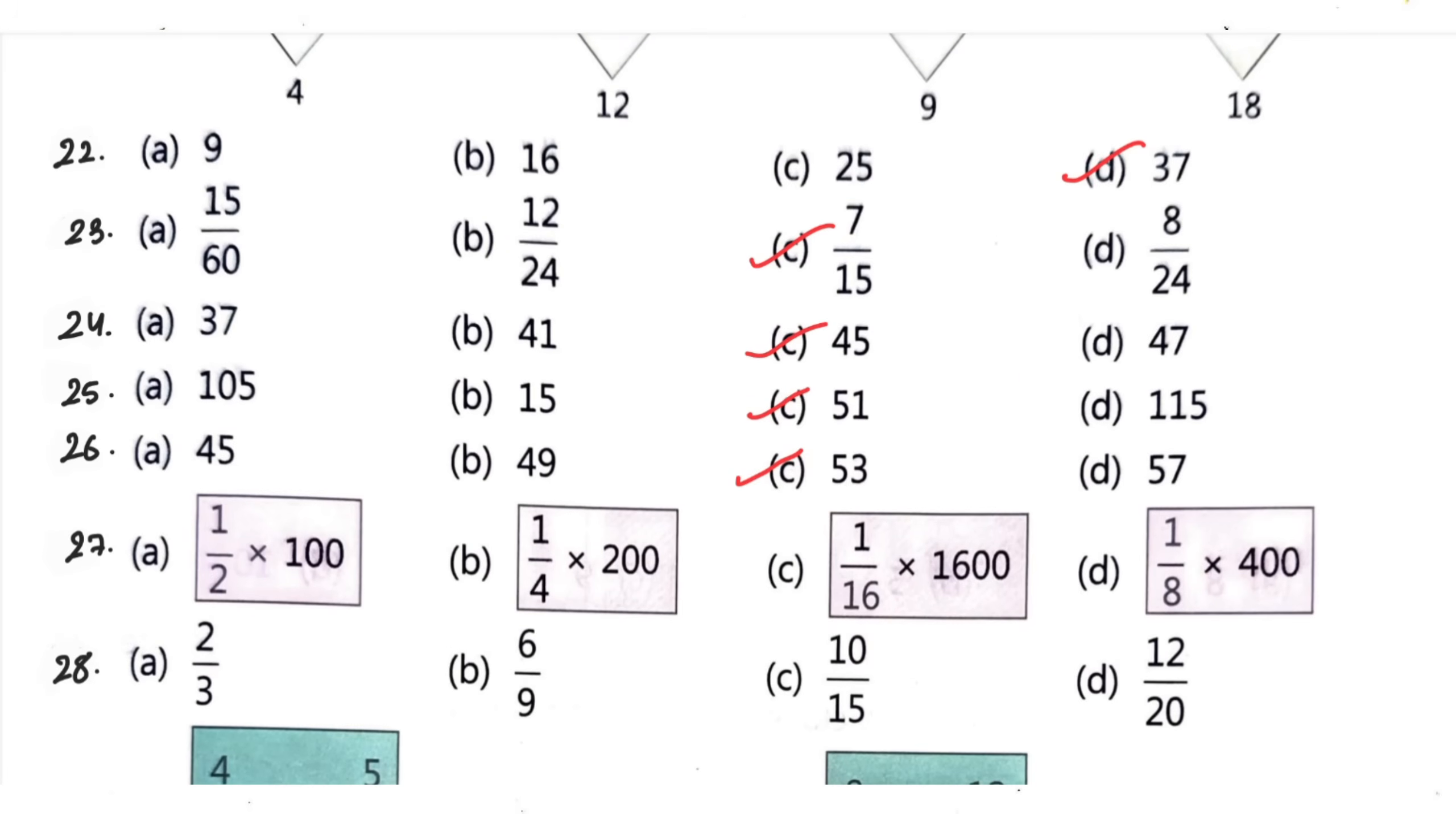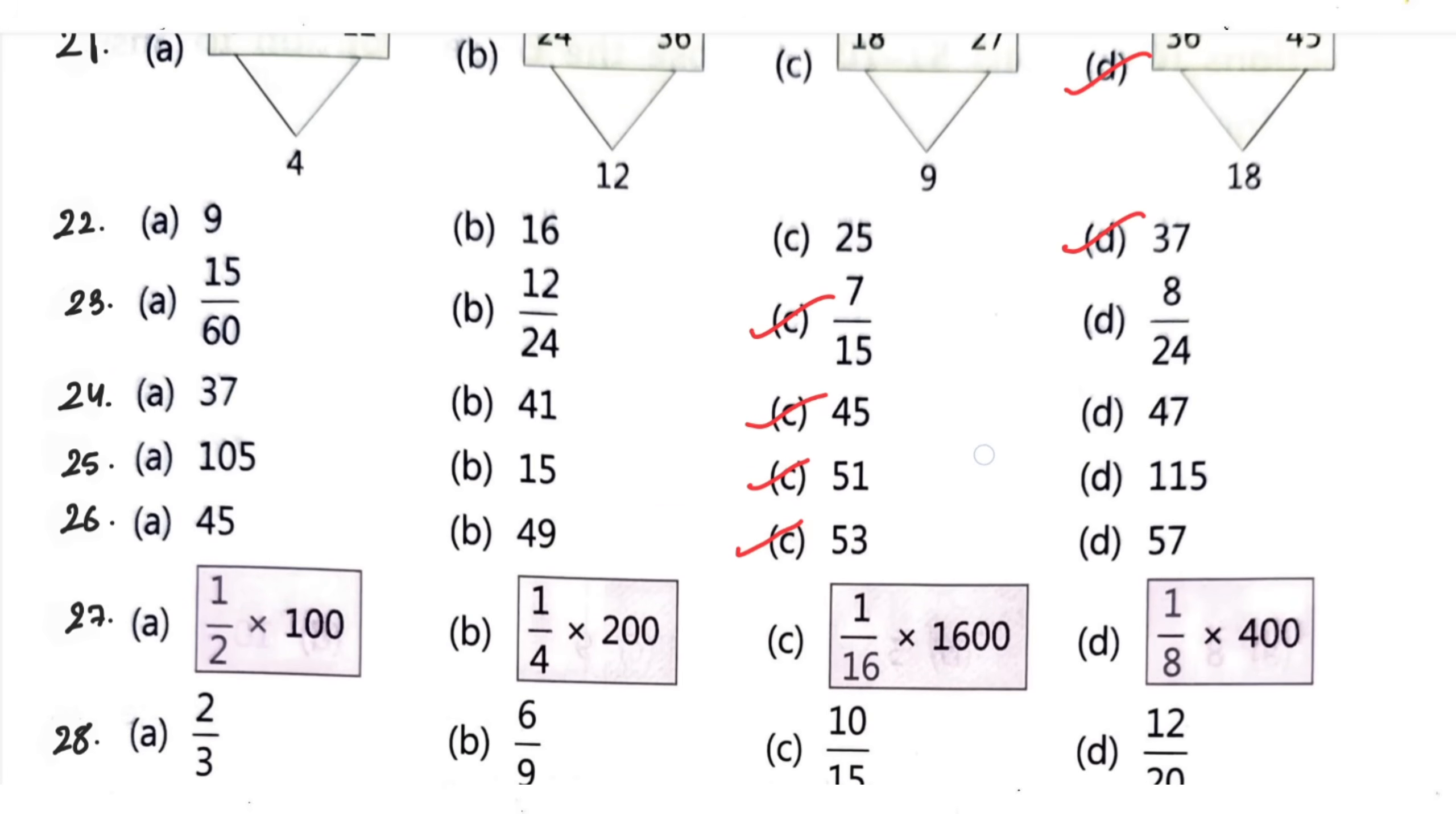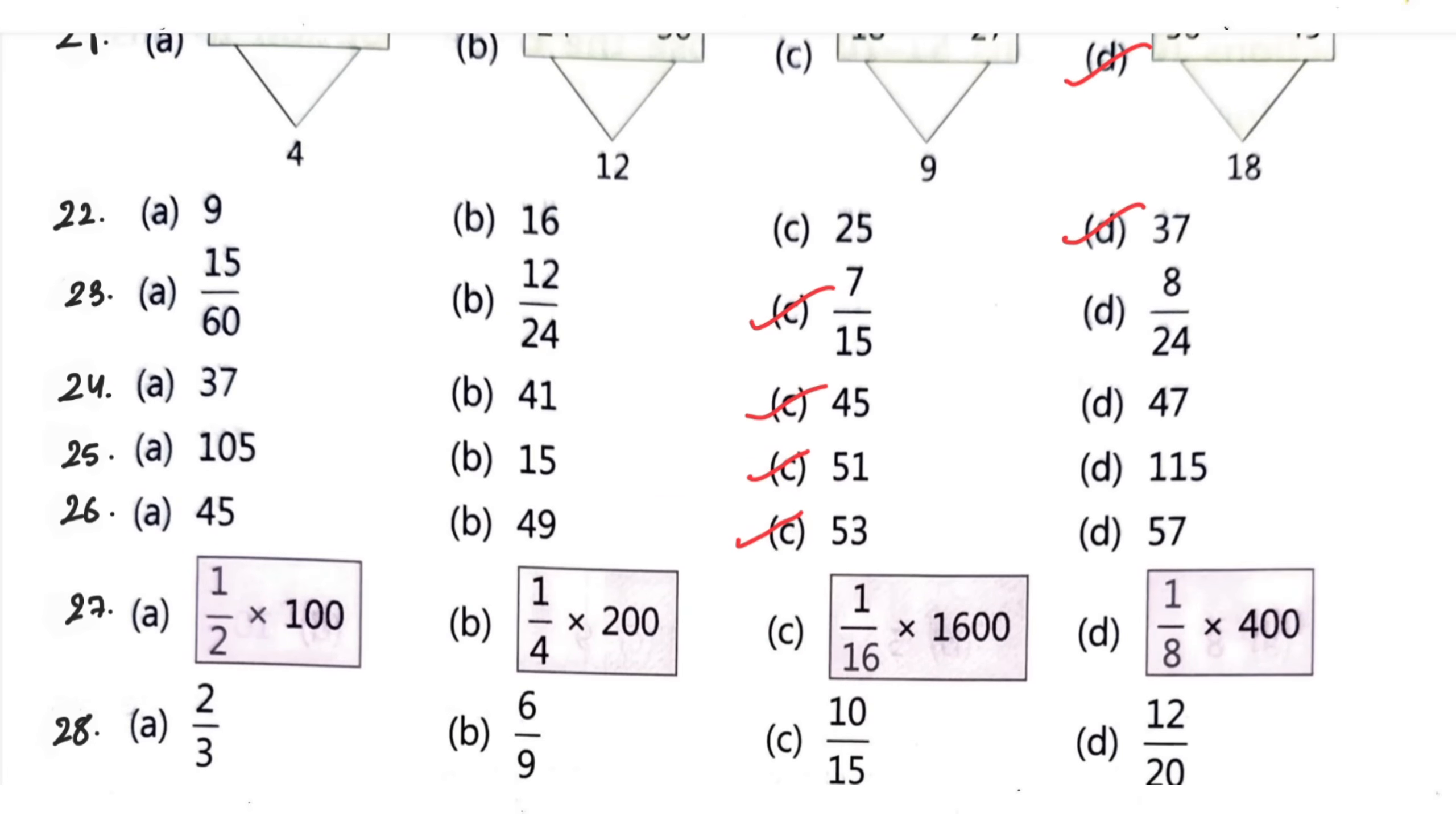Next they have given one series: 1 by 2 into 100, 1 by 4 into 200, 1 by 16 into 1600, 1 by 8 into 400. Odd one out is C, 1 by 16 into 1600. Question number 28: 2 by 3, 6 by 9, 10 by 15 and 12 by 20. Out of all, odd one out is D, 12 by 20.